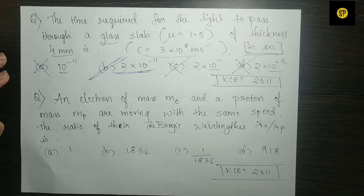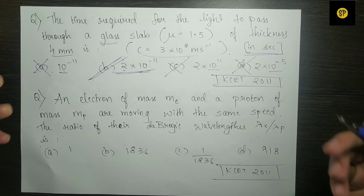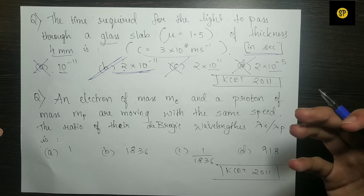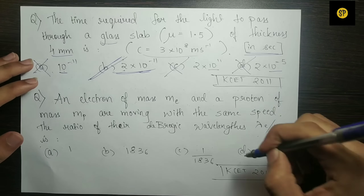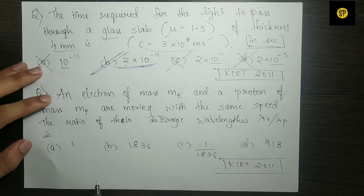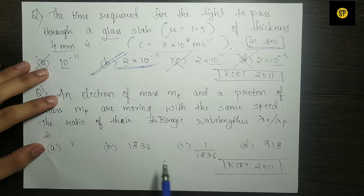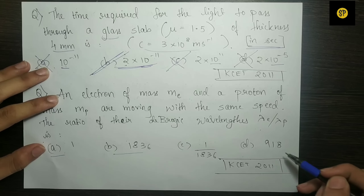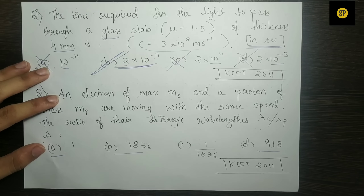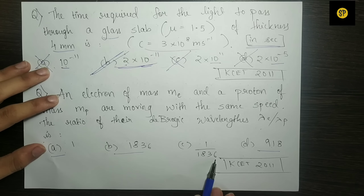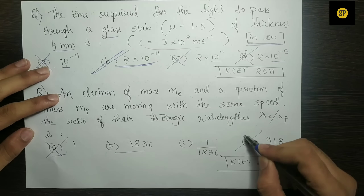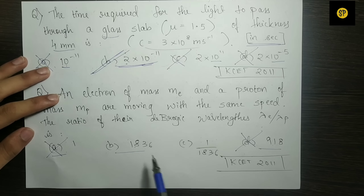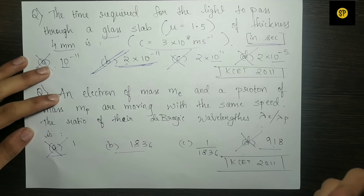The mass of the electron is around 10 to the power minus 31 and the proton is 10 to the power minus 27. The ratio Mp by Me is approximately 1836. Looking at the options — 1836, 918 — since 918 is 1836 divided by 2, that would be a calculation mistake. So we can eliminate 918.